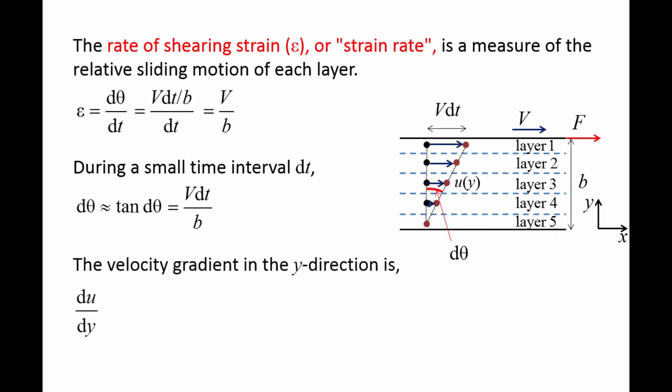The velocity gradient du dy is the rate velocity varies in the y direction. The change in velocity from the top plate to the bottom plate is u evaluated at y equals h minus u evaluated at y equals 0.